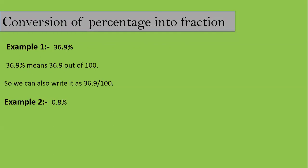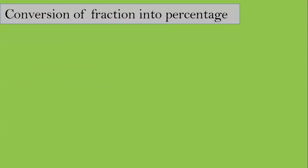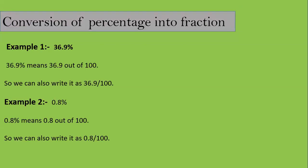Now for 0.8 percent — by removing the percent sign we write 0.8 out of 100, which can be written as 0.8 divided by 100. So we have just covered how a percentage can be converted into a fraction.